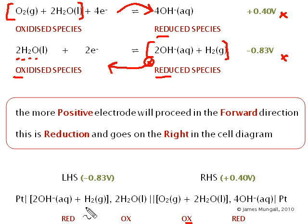What that will mean is that we could look at the cell diagram and say that that reduced species becomes that oxidized species, that oxidized species becomes that reduced species.